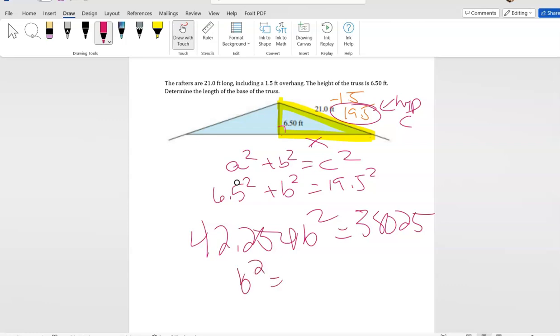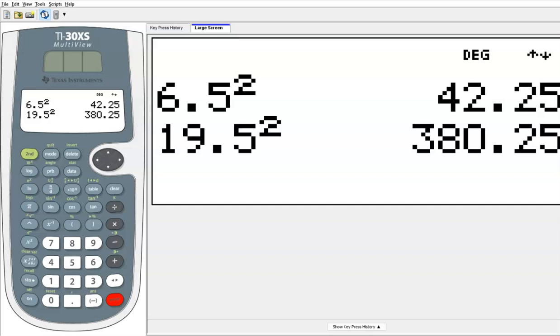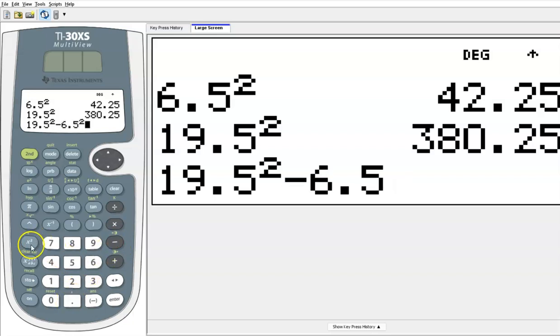So to find b squared, I have to subtract the 42.25 from both sides. So what I would actually do, if I was actually doing this, I would do 19.5 squared minus 6.5 squared. I would have done it this way. But you can also write them down and put in those numbers as well.